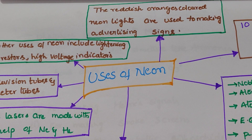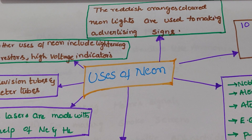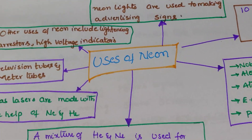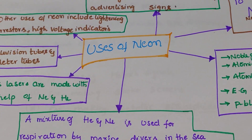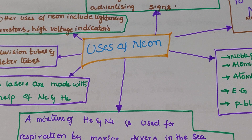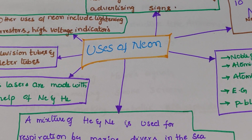In summary: neon is reddish orange in color; neon lights are used to make advertising signs; neon is used in television tubes and meter tubes; it is used as high voltage indicators and arrestors; gas lasers are made with neon and helium; and it is used for respiration by marine divers in the sea, because helium is less soluble in blood than nitrogen at higher pressures.